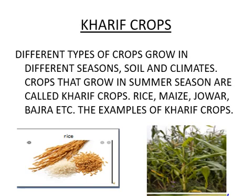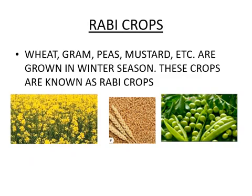Next are Rabi crops. Kharif crops are those which grow in summer and Rabi crops are those which grow in winter season. You will need to learn the difference between Kharif crops and Rabi crops for homework. Crops that grow in summer season are called Kharif crops, and crops that grow in winter season are called Rabi crops. Examples of Rabi crops are wheat, gram, peas, mustard, etc.